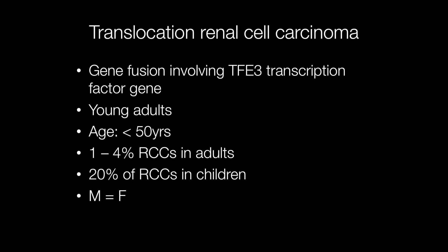Translocation renal cell carcinomas occur in young adults less than 50 years old and account for 1 to 4% of adult renal cell carcinomas. However, they account for around 20% of renal cell carcinomas in children, and the tumours are characterised by gene fusion involving the TFE3 transcription factor gene.